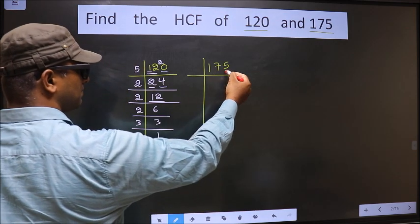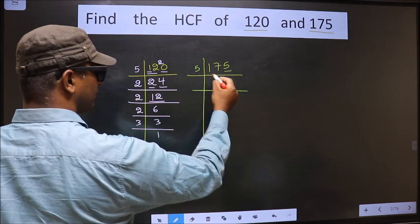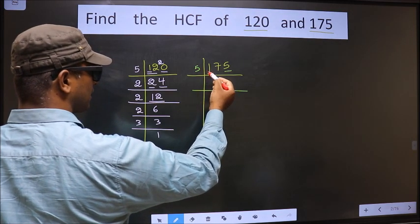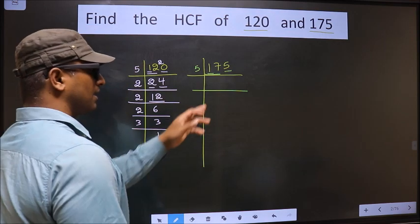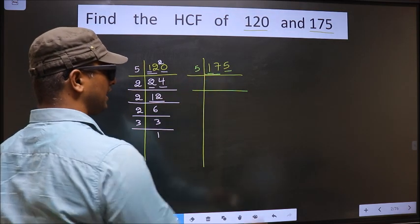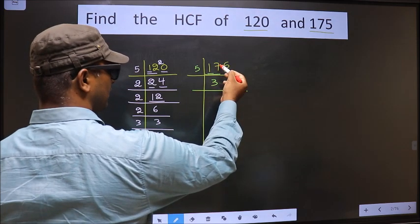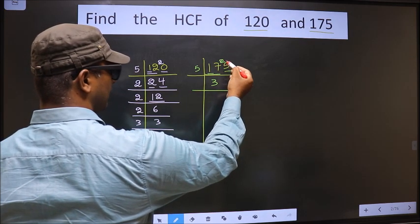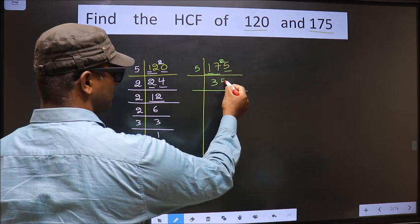Now for this number, the last digit is 5, so we take 5 here. The first number is 1, smaller than 5, so we take 2 numbers, that is 17. A number close to 17 in the 5 table is 5 times 3 is 15. 17 minus 15 is 2, 2 carried forward making it 25. When do we get 25 in the 5 table? 5 times 5 is 25.